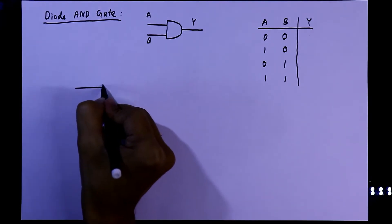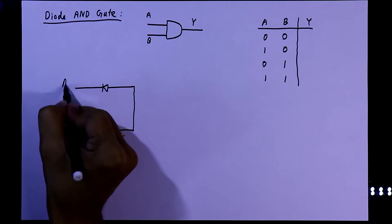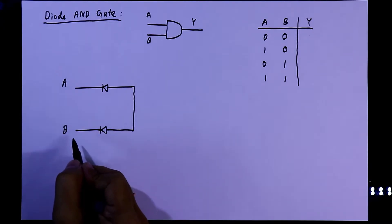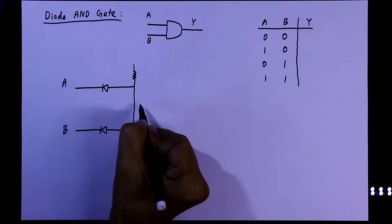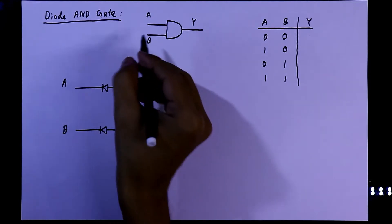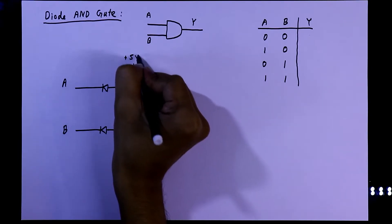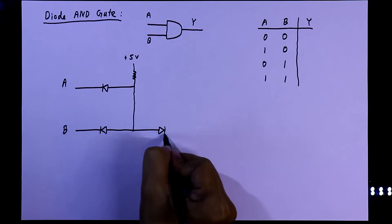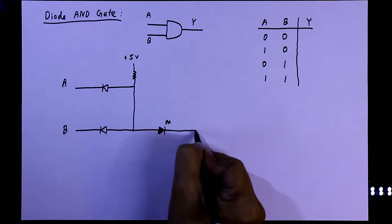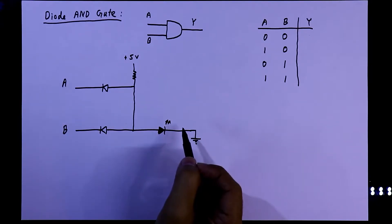We need two diodes — diode one and diode two — with input A and input B provided at the cathode side. We connect a pull-up resistor to the anode pins of the diodes and provide plus 5 volts. The output is taken through an LED, with the negative pin of the LED connected to ground. This is the circuit of the diode AND gate.